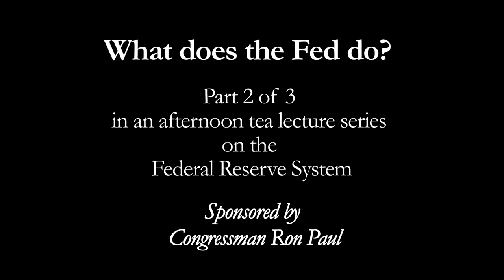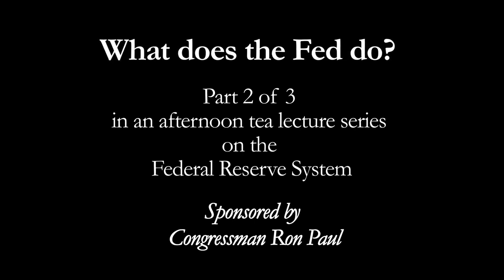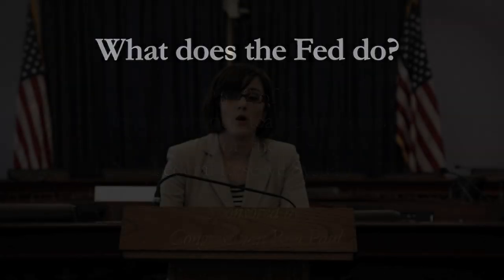If you'll bear with me a few moments, I'd like to share where we've come in our Tea Talks — we've had four so far. Our first series started out talking about the basic principles of money: what is money, what is constitutional money? We learned that money is a commodity derived from the marketplace — whatever commodity the marketplace chooses to use as a medium of exchange.